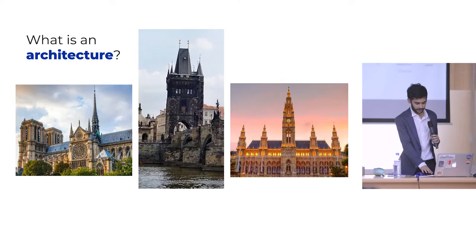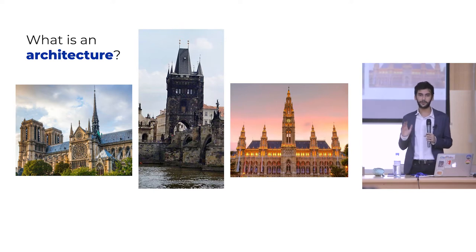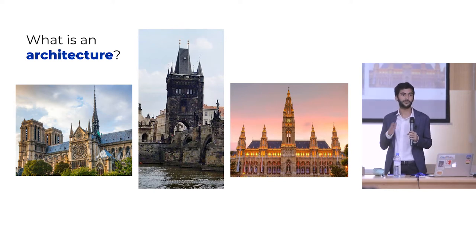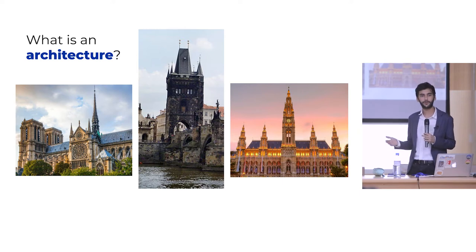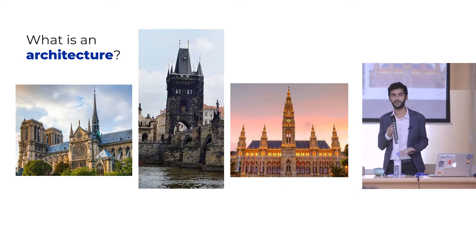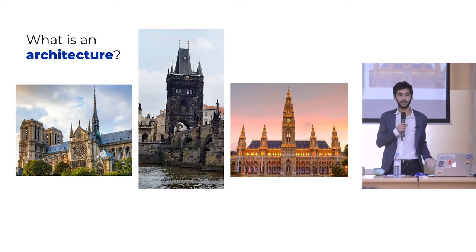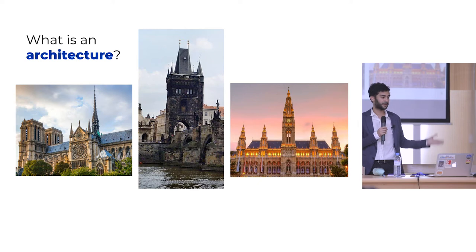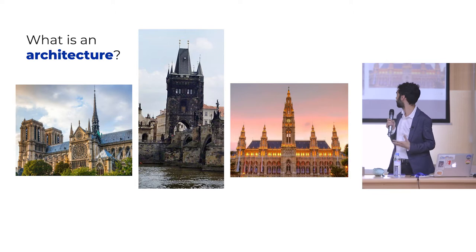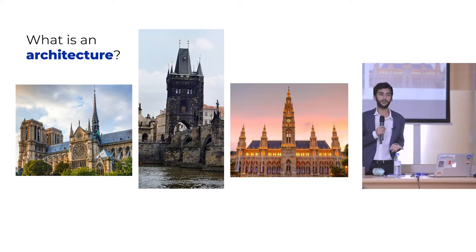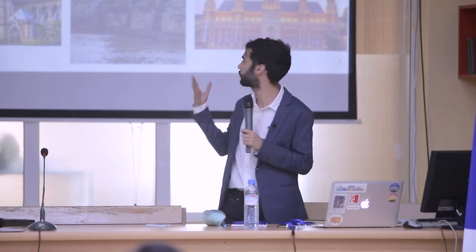Another thing I want to mention is: what is an architecture? Because we are saying today's architecture is flawed and there are other options for internet architecture — but what is an architecture? In the case of buildings, here we have three different buildings that are for different purposes: we have a bridge, a cathedral, a governmental house, and we can all see that they are of gothic architecture. Can someone say why you understand that it's gothic architecture — what do you see?